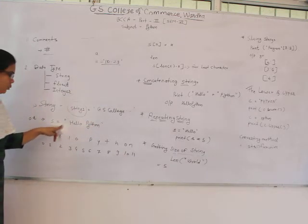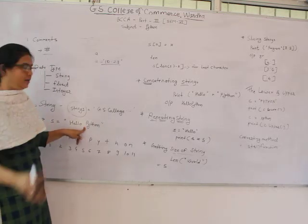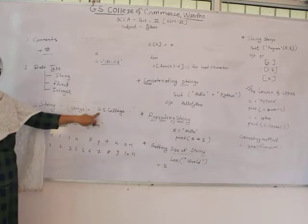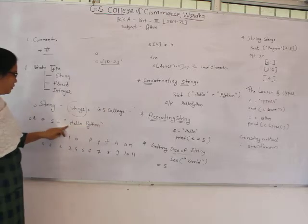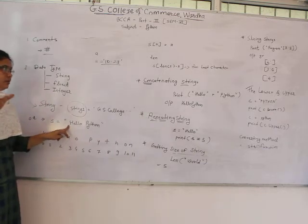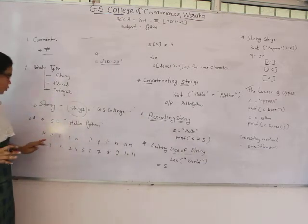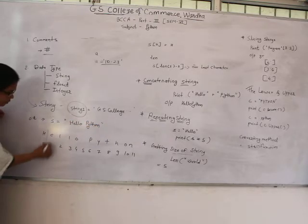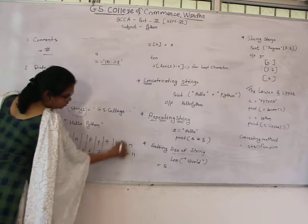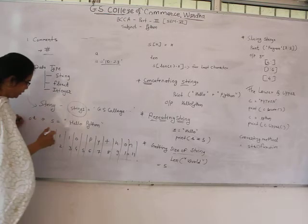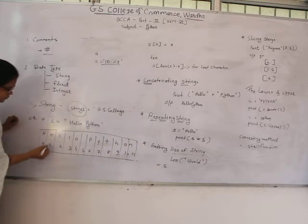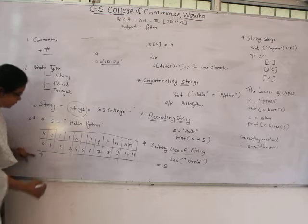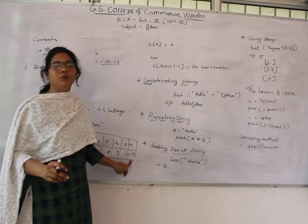For example, S = 'hello python'. Python supports single or double quotation marks for strings. When we assign or create a string variable, the compiler manages memory and stores our string like a single-dimensional array. The array index starts from 0, and the length of the string determines the size of that array.